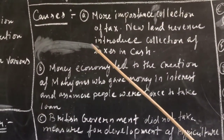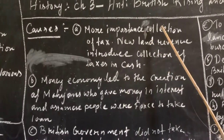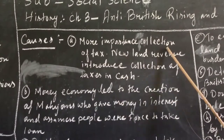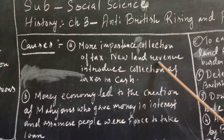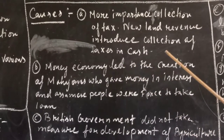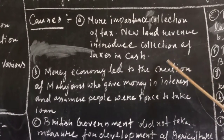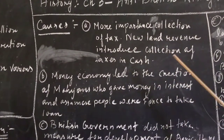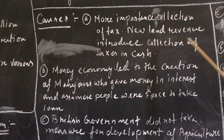What were the causes of the anti-British uprising? The first cause: more importance was given by the British government to collection of tax. A new land revenue system was introduced requiring collection of tax in cash. Before, Assamese people used to give tax in kind — grains at the end of the year — but now they had to pay revenue in cash, which was very difficult for the people of Assam.